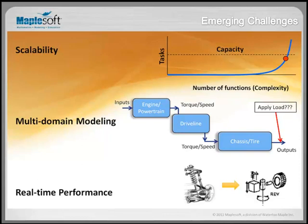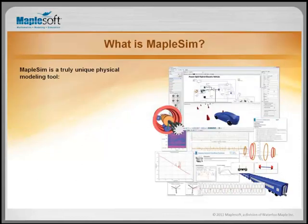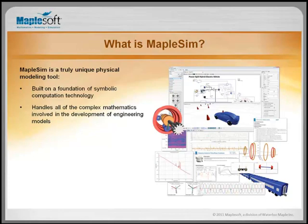MapleSim is a truly unique physical modeling tool — it's completely different. It's built on a foundation of symbolic computation technology, built on top of Maple, which enables all its key differentiators. Maple can solve equations, letting MapleSim use mathematics as opposed to just numerical routines. That means MapleSim and Maple handle all of the complex mathematics involved in engineering model development — that burden is no longer on the engineer. You don't have to open your lab book and write out equations; it's just taken care of.